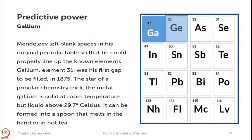Another interesting thing is the predicting power of Mendeleev's periodic table. Mendeleev left blank spaces in his original table where elements were not known at that time. For example, he left a gap below aluminum and silicon and called them eka-aluminum and eka-silicon, and later gallium and germanium were discovered.